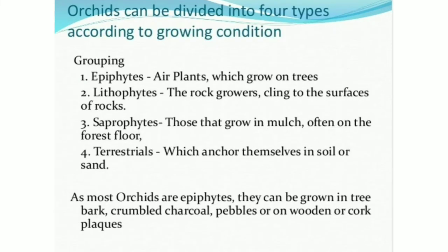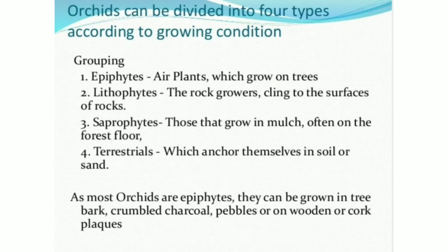Orchids can be divided into four types according to growing condition. Epiphytes are air plants which grow on trees. Lithophytes are the rock growers that cling to the surfaces of rocks. Saprophytes are those that grow in mulch, often on the forest floor. Terrestrials anchor themselves in soil or sand. As most orchids are epiphytes, they can be grown in tree bark, crumbled charcoal, pebbles, or on wooden or cork flakes.